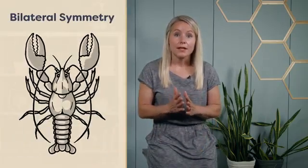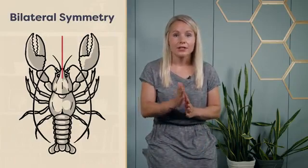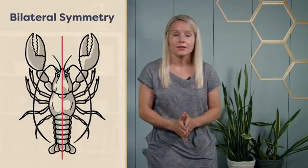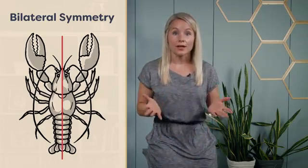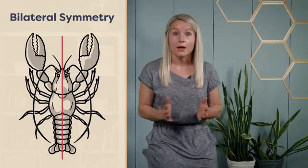An organism shows bilateral symmetry if it can be split along only the anterior-posterior axis forming a single plane of symmetry that separates the body into left and right sides as illustrated by this lobster.